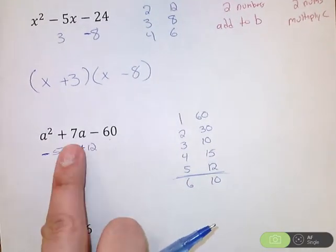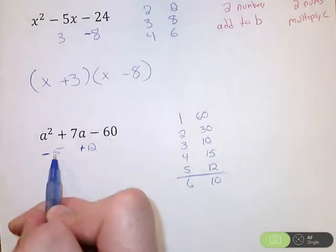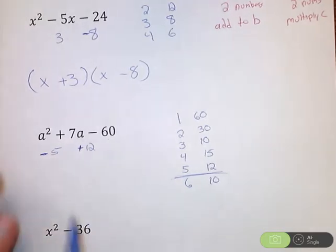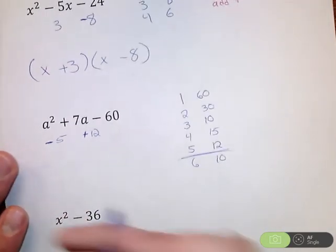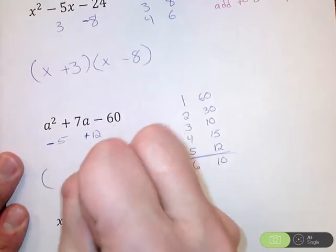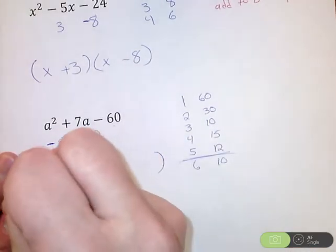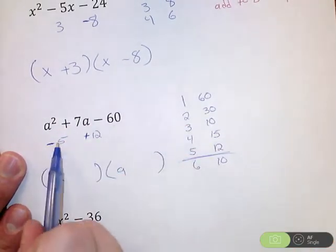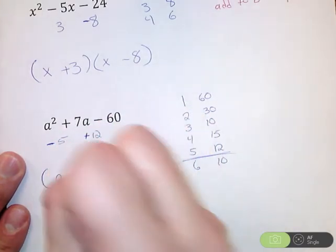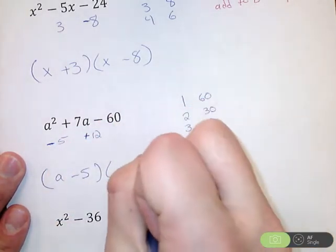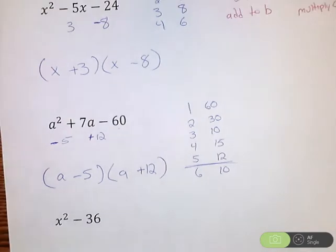So I'm going to have a negative 5 and a positive 12. Since I'm dealing with a and not x, I want to pay attention to that. I'm going to have two sets of parentheses here. Put an a in each of them. And we said negative 5, so I'm going to have a minus 5 and positive 12, so I'm going to have an a plus 12 as my two factors.